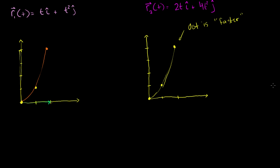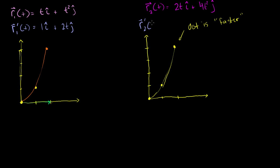Now let's look at the derivatives of both. r1 prime of t: the derivative of t with respect to t is 1, so 1i, plus the derivative of t squared is 2t, so plus 2tj. And r2 prime of t: the derivative of 2t is 2, so 2i, plus the derivative of 4t squared is 8t, so plus 8tj.